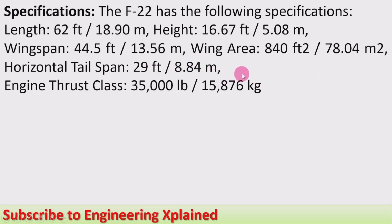Horizontal tail span: 29 feet or 8.8 meters. Engine thrust class: 30,500 lb or 15,876 kg.